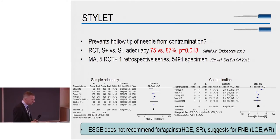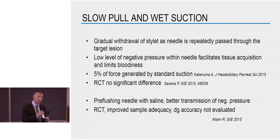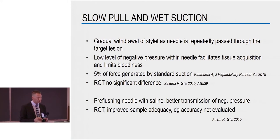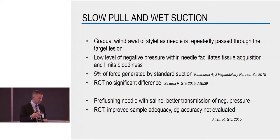The recommendation for FNB needles comes from the fact that most FNB needles are used with a stylet, and most published literature will have a stylet. There are techniques like the slow pull — slowly pulling while moving within the tissue — where it was thought this could generate some negative pressure to facilitate tissue acquisition. However, bench studies showed this doesn't generate much pressure, and one randomized study from Hopkins by Dr. Saxena showed no difference. Wet suction — filling the needle with saline to better transmit negative pressure — showed better sample adequacy in one randomized study, but accuracy was not evaluated, so there's not really much data.